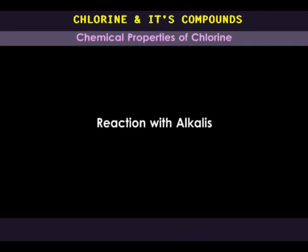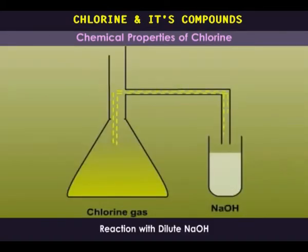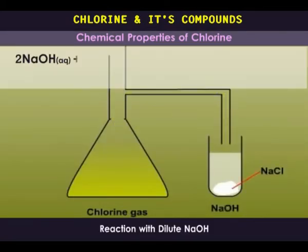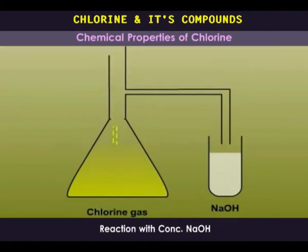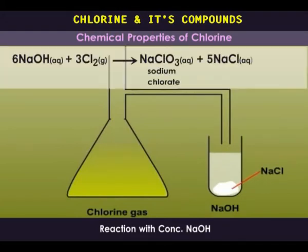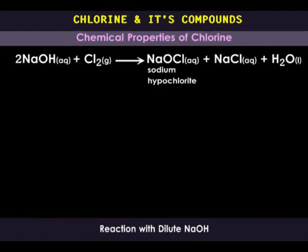Reaction with alkalis. When chlorine gas is bubbled into a solution of dilute sodium hydroxide, sodium hypochlorite and sodium chloride are formed. When chlorine gas is bubbled into a solution of concentrated sodium hydroxide, sodium chlorate and sodium chloride are formed. Sodium hypochlorite, like hypochlorous acid, is able to bleach dyes.